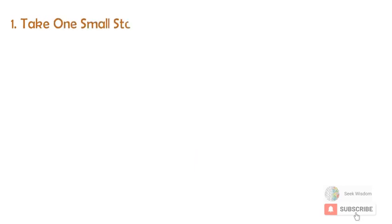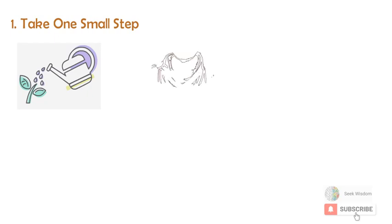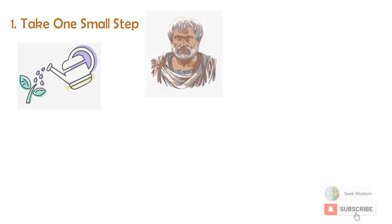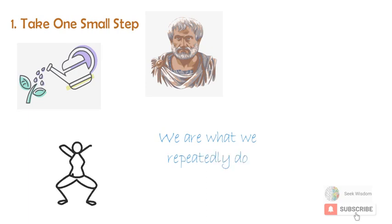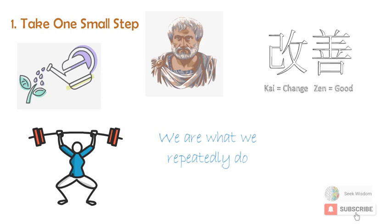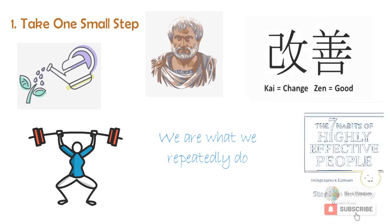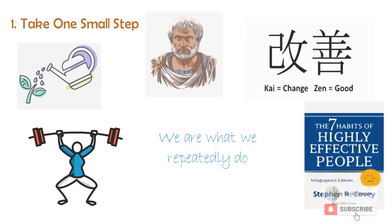Let's get started. One: Take one small step. Your daily habits aren't just important, they're the whole ballgame. Aristotle knew this when he wrote We Are What We Repeatedly Do. And despite your natural desire to fix everything at once, the best way to get big results is to make tiny, continuous changes to daily habits. In Japan, this is known as Kaizen, introduced to American readers in Stephen Covey's 1989 bestseller The Seven Habits of Highly Effective People.